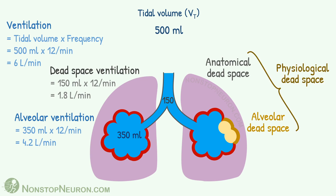Physiological dead space is the sum of anatomical dead space and alveolar dead space. A healthy person does not have alveolar dead space, so anatomical and physiological dead spaces are identical. But in some diseases, physiological dead space is more than anatomical dead space.